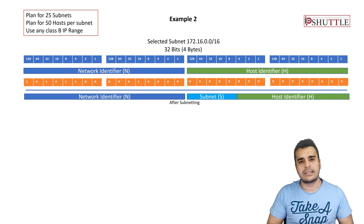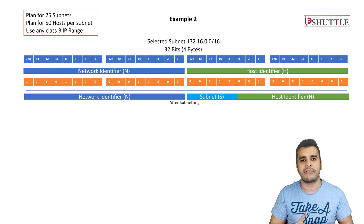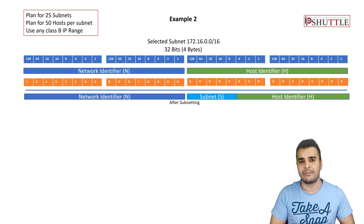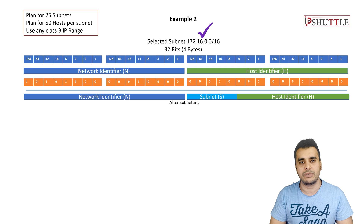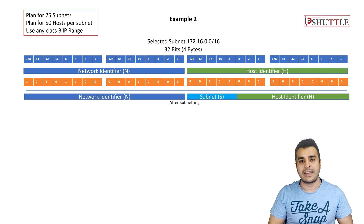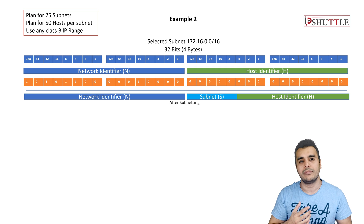In example two, the question changes: we now need 25 subnets with 50 hosts per subnet. We have selected the same base address 172.16.0.0/16 to keep things consistent. The first step is to calculate how many subnets we need and how many bits we must acquire from the host identifier to create those multiple subnets.